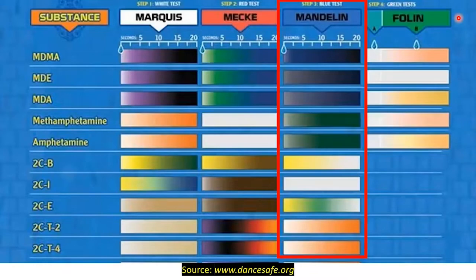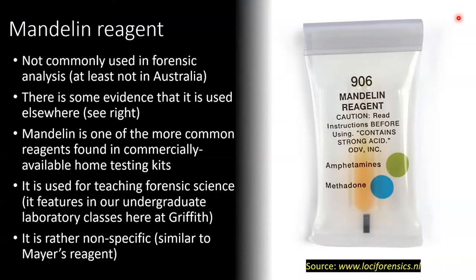Today we're just going to be talking about Mandolin reagent, and we'll follow up with the other reagents another day. As far as I can tell, Mandolin reagent is not commonly used for forensic analysis, at least not in Australia. There is some evidence that it is used elsewhere — there's a pre-made field test for Mandolin reagent whose website comes from the Netherlands, so perhaps in Europe they are using it in the field. It is one of the more common reagents found in commercially available home testing kits, and given it's convenient to prepare, it's often used for teaching forensic science at universities, including in our undergraduate laboratory classes here at Griffith University.